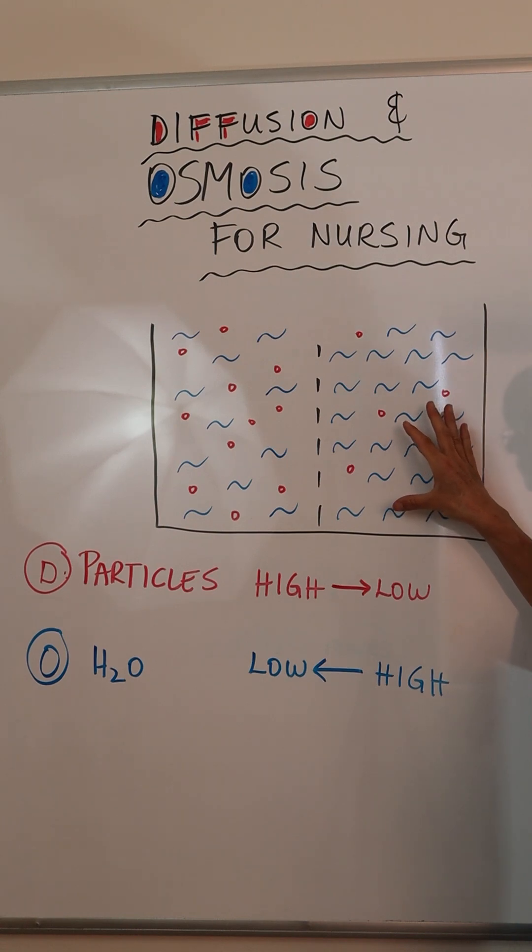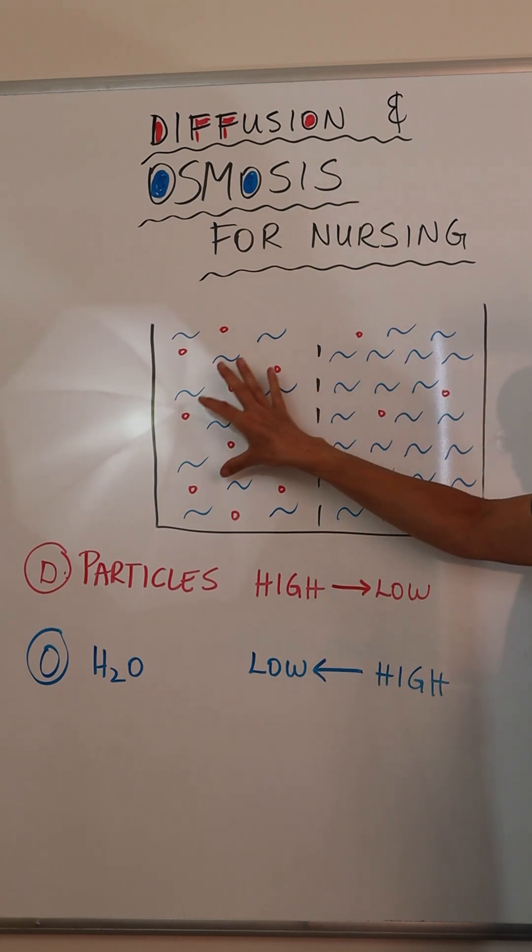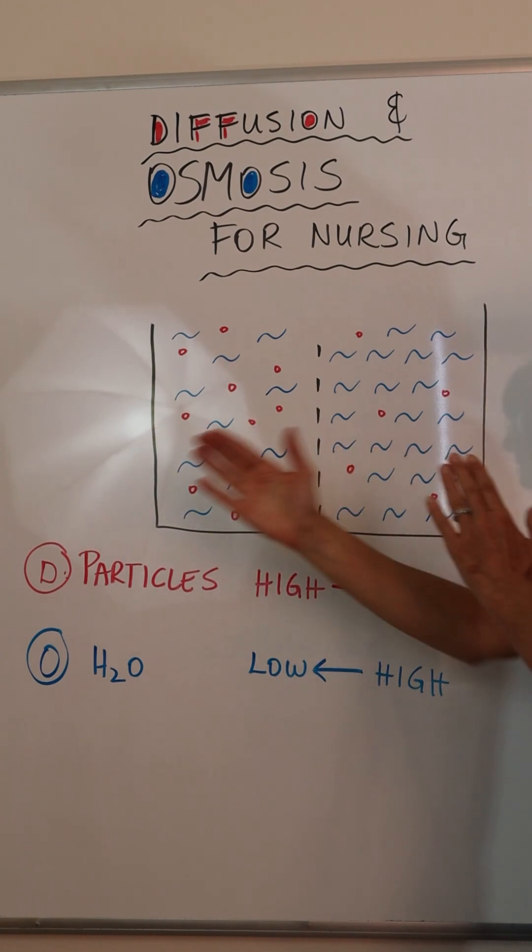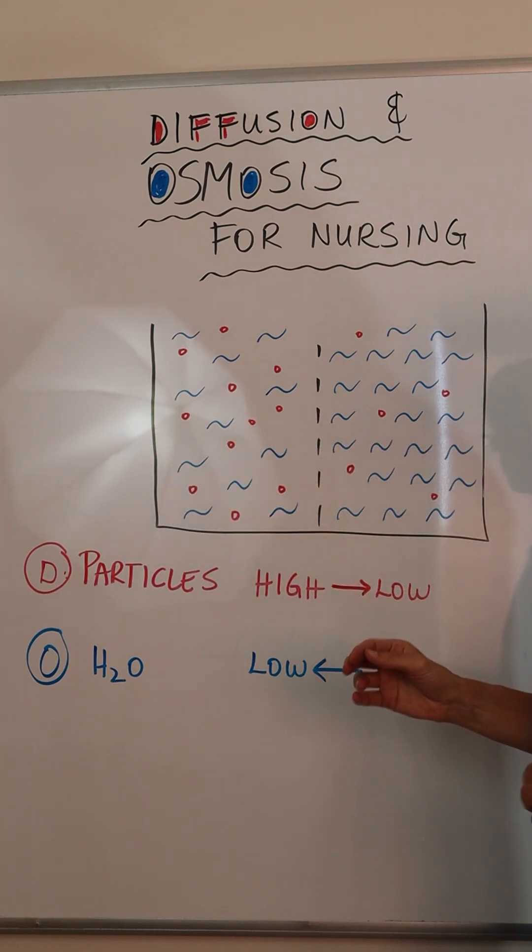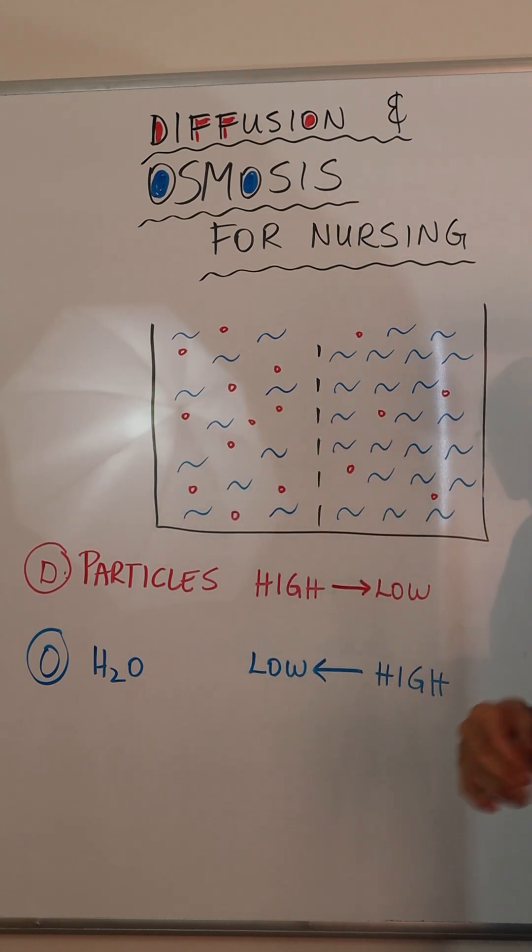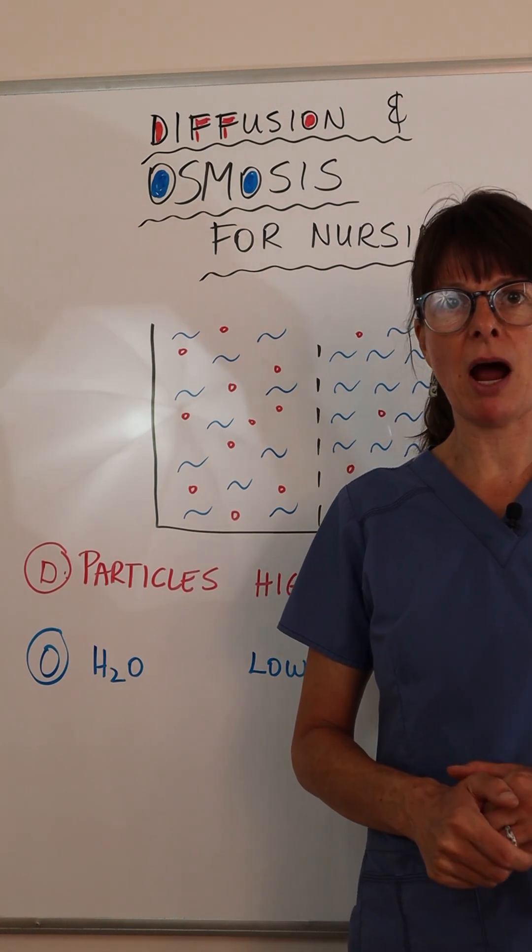The principle of diffusion means that particles move from a higher to a lower concentration, and the principle of osmosis tells us that water moves from a higher to a lower concentration. The body always tries to equalize across this semi-permeable membrane to make everything 50-50, exactly balanced. This is why this is so important to know for fluid and electrolytes in the body.